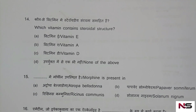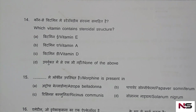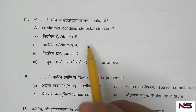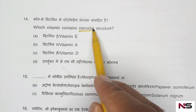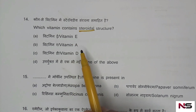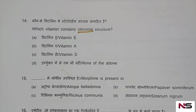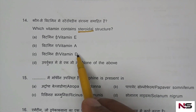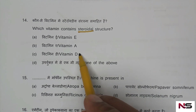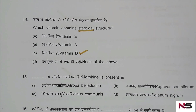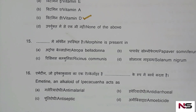Question 14: Which vitamin contains a steroidal structure? Options: A) vitamin E, B) vitamin A, C) vitamin D, D) none of the above. We know that vitamin D is called calciferol, which has a steroidal structure. Option C, vitamin D, is the correct answer.